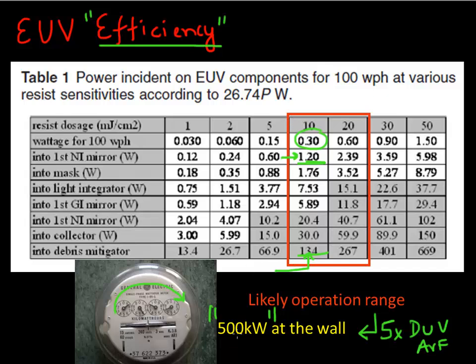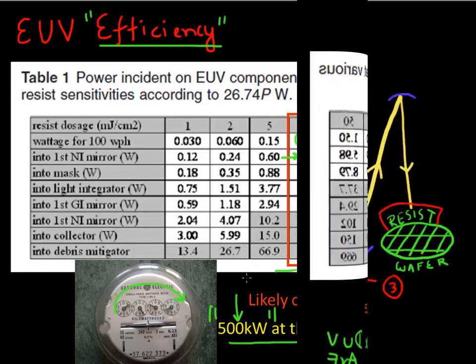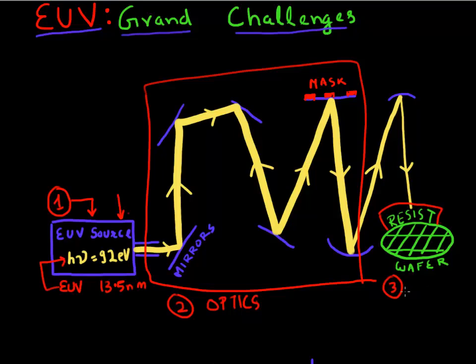One is to make this whole process more efficient and reduce this power consumption. The second thing one can say is, I cannot increase my incoming light too much, but can I play with the resist now? Can I make the resist more sensitive? So that brings us to this last challenge of the three challenges I described: the challenge with the resist that you require for EUV.